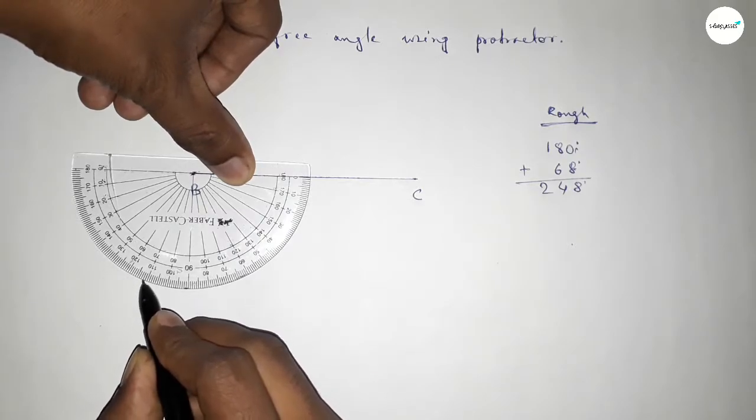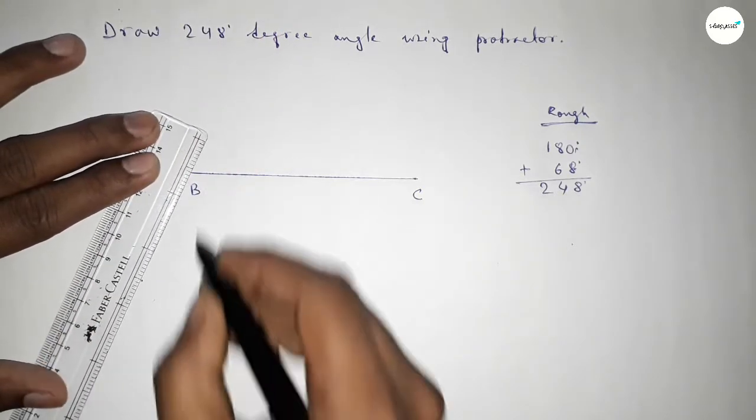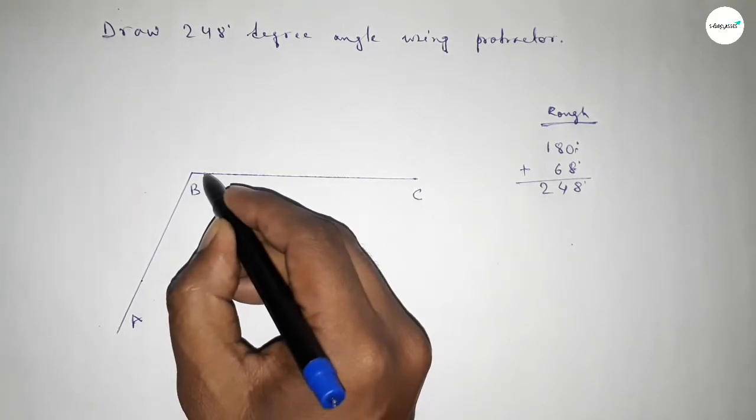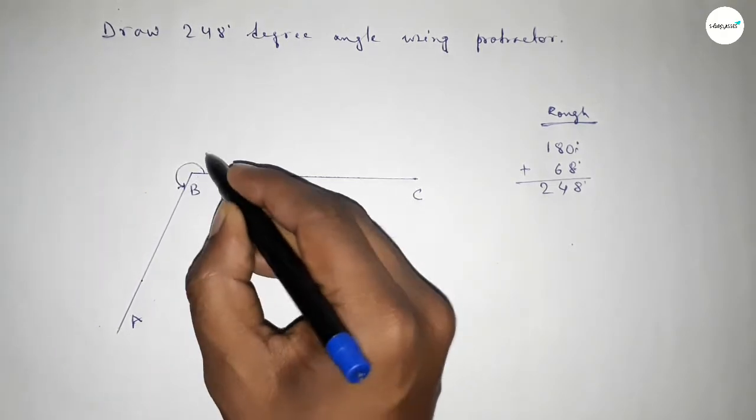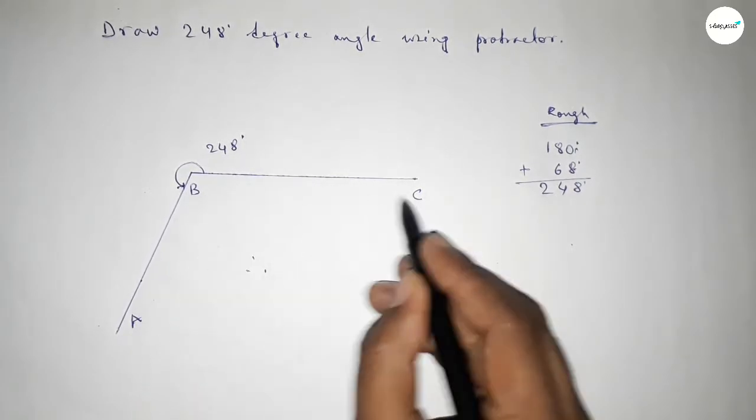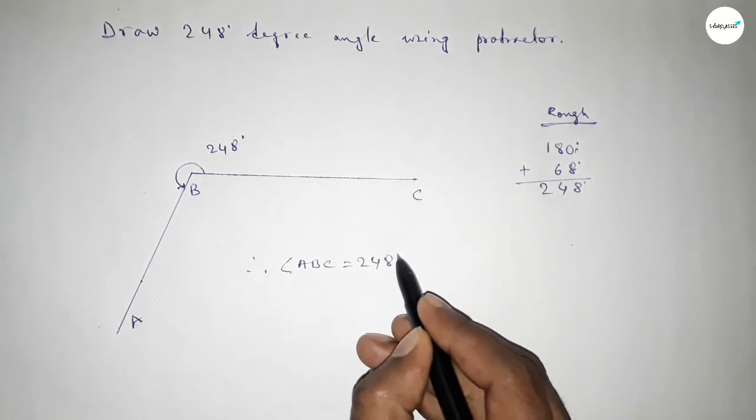Now joining this to get 248-degree angle and taking here point A. So angle ABC, up to this, this is 248-degree angle. Therefore, angle ABC equals 248 degrees.